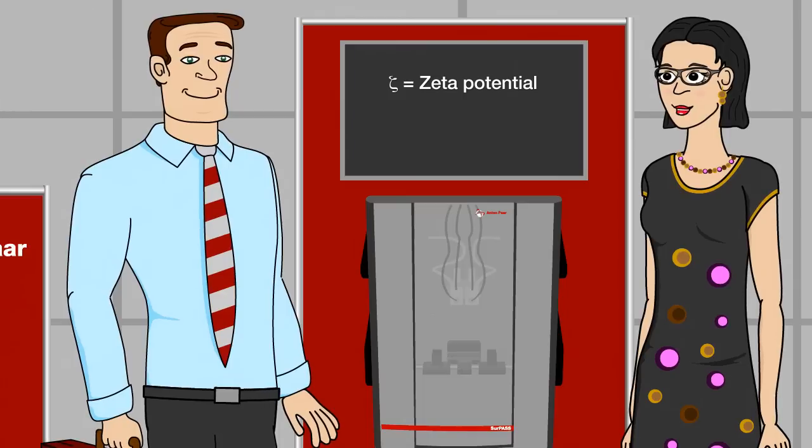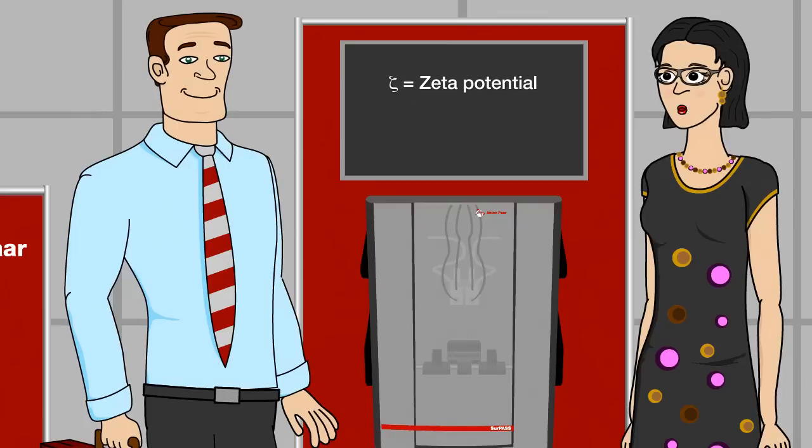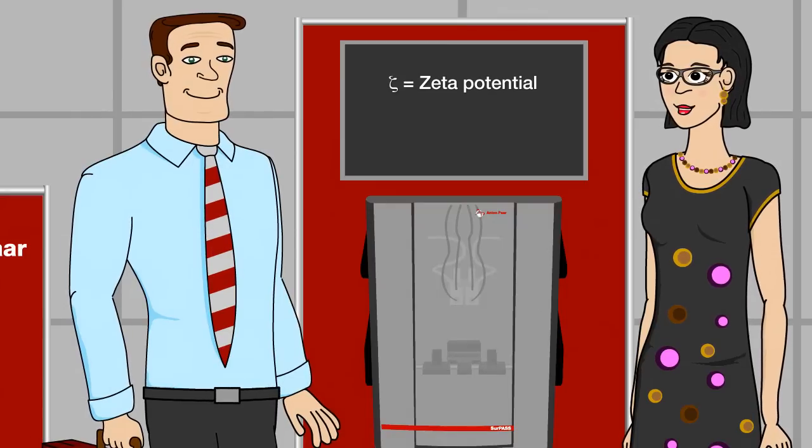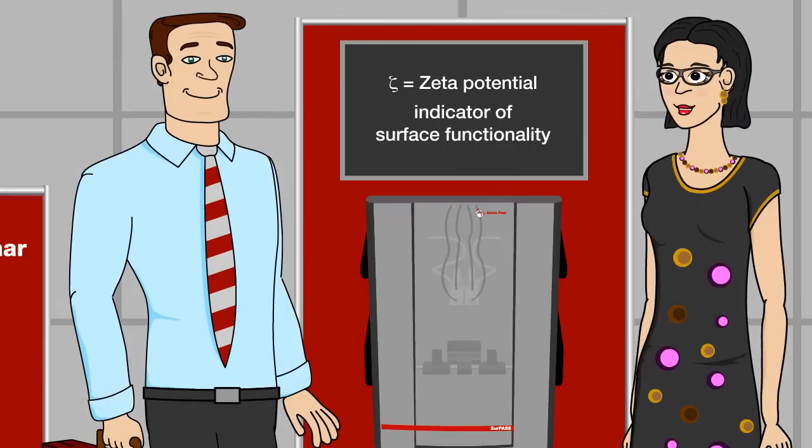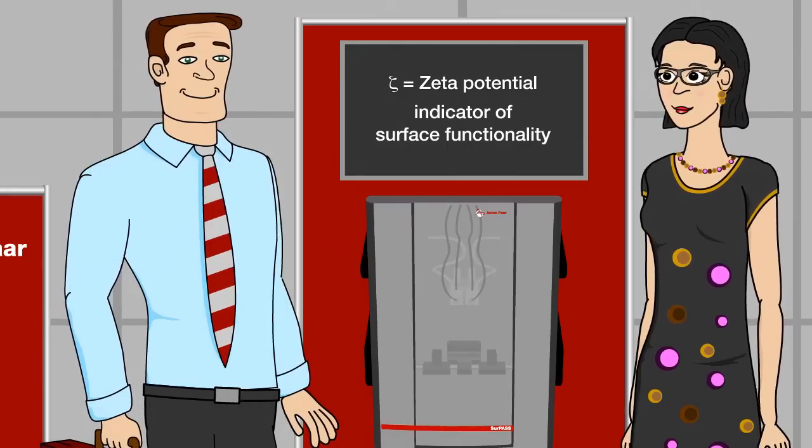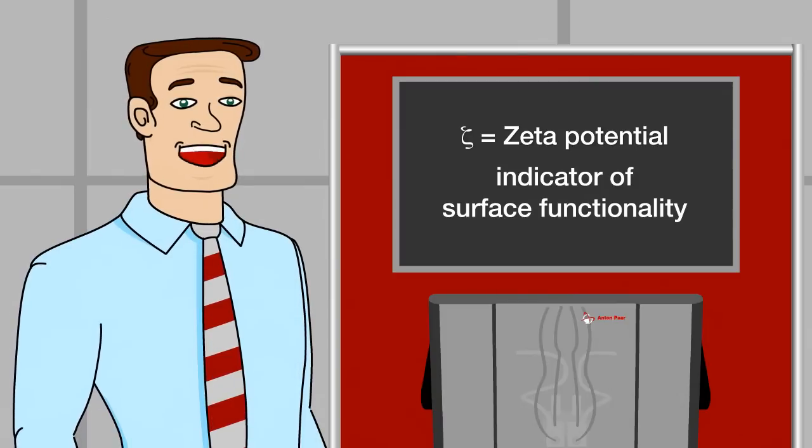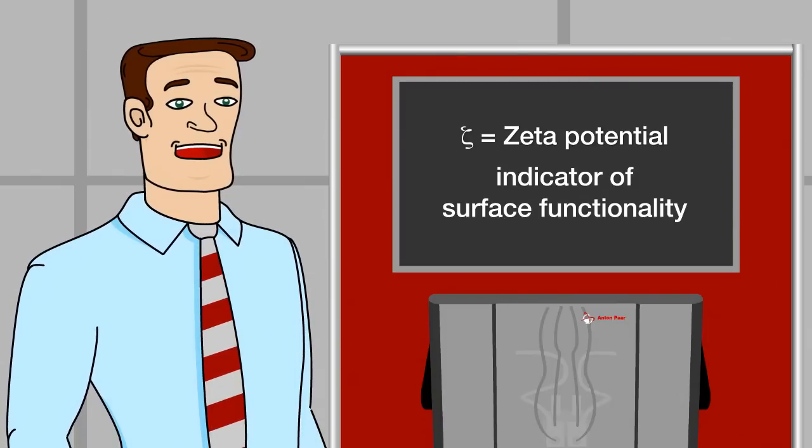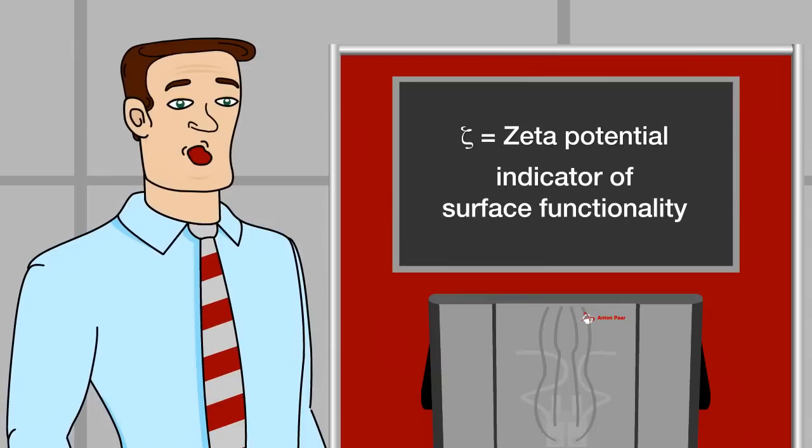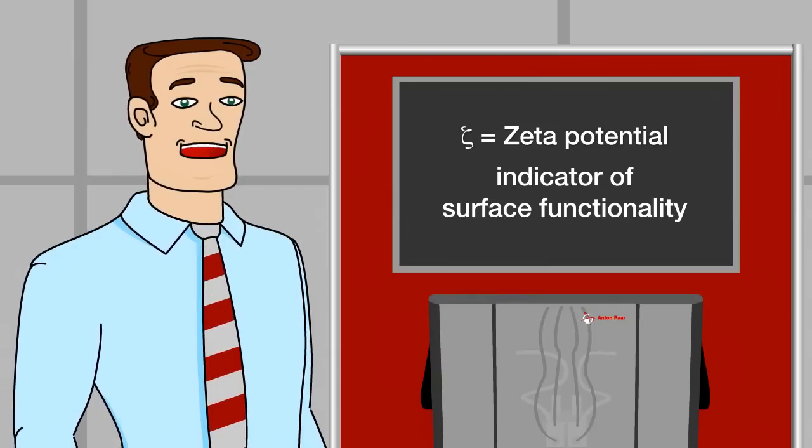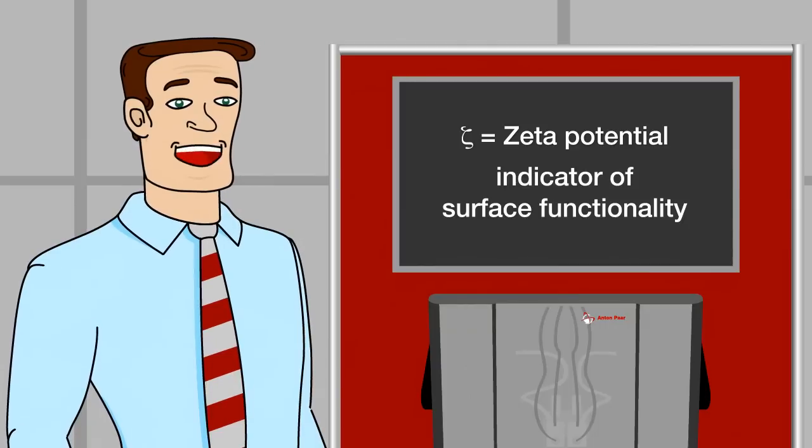So you see, the zeta potential tells you how a surface will interact with the liquid, how the surface will function. Surface functionality. That's an important keyword. Okay. So SURPASS determines this zeta potential. Based on this information, I can modify or treat a surface until it interacts with a liquid like I want it to.